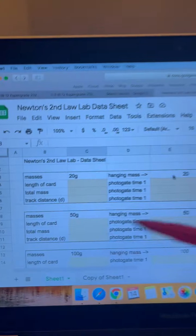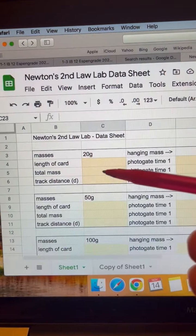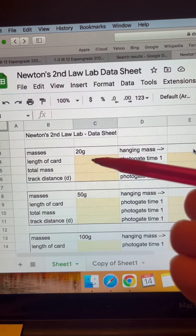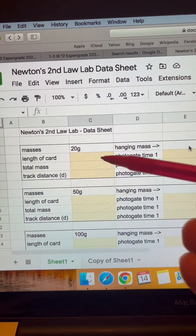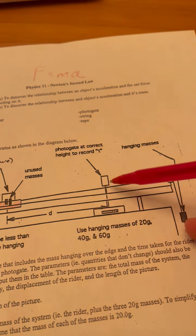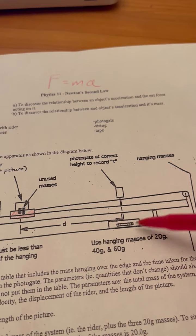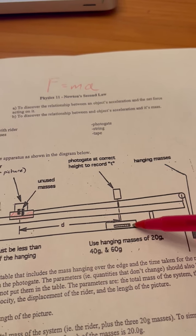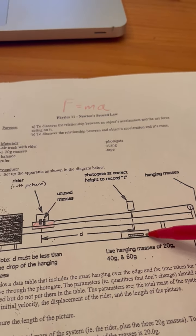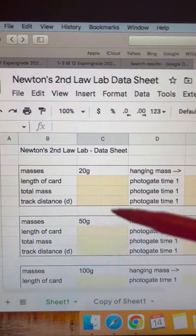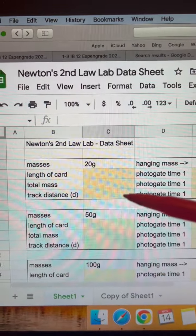You're going to weigh all your stuff, and that's your total mass. You're also going to measure the length of the card on your rider, because that's going to allow us to get the final velocity, which is the length of this card divided by the time on here. I think some of you have done this before. And then the other thing you need to write down is your track distance.